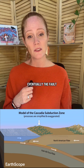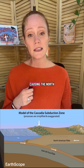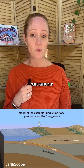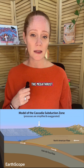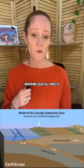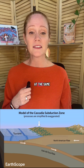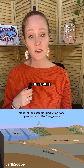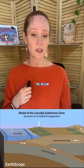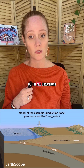Eventually, the fault breaks in an earthquake, causing the North American plate to slide rapidly up the megathrust, dropping coastal forests below sea level. At the same time, the edge of the North American plate lifts the ocean, sending a tsunami out in all directions.